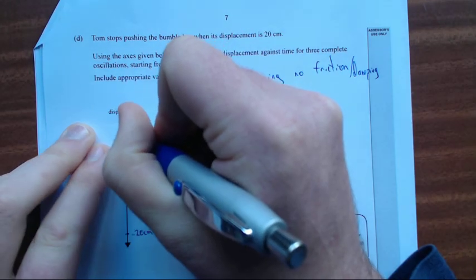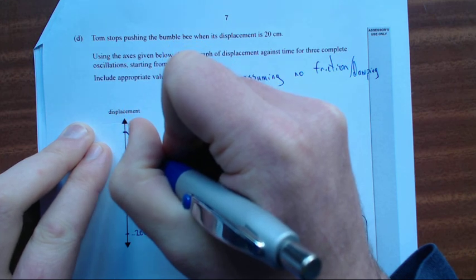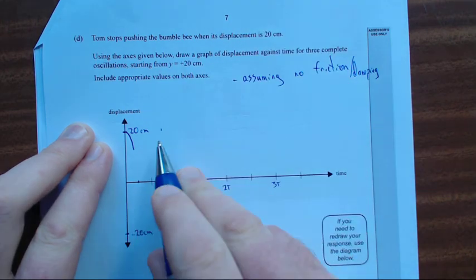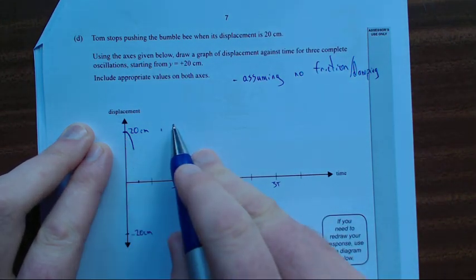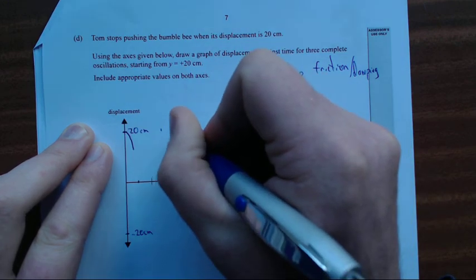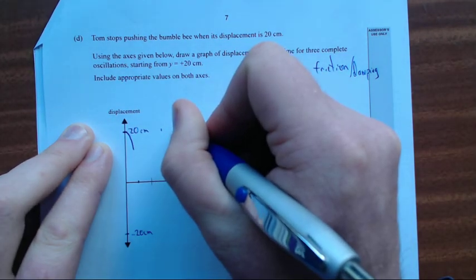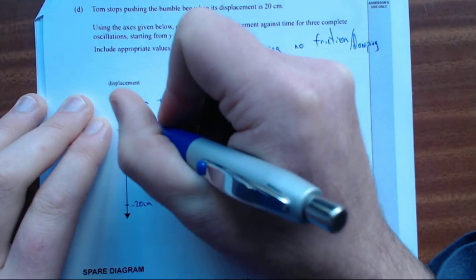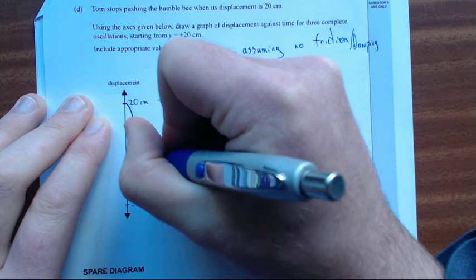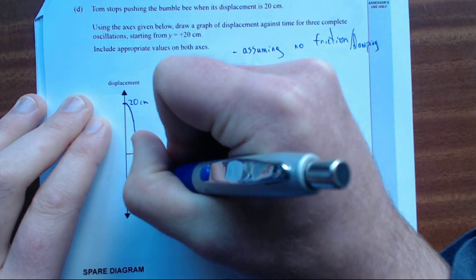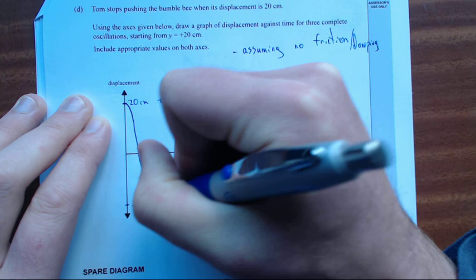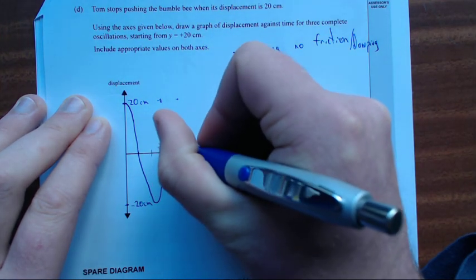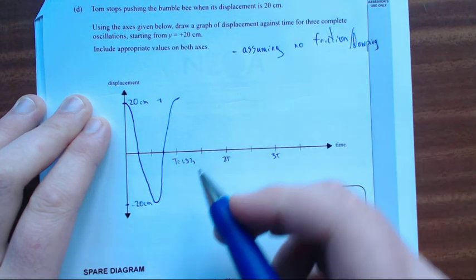This is starting from positive 20 centimeters. That means I'm going to start from here, I'm going to draw a nice sine graph. One full cycle - it's not that. That's one full cycle here. It needs to cut through the axis here, through here, down to the negative 20 centimeters, back up.